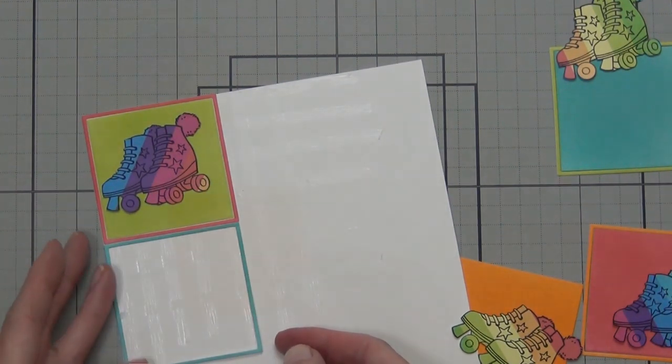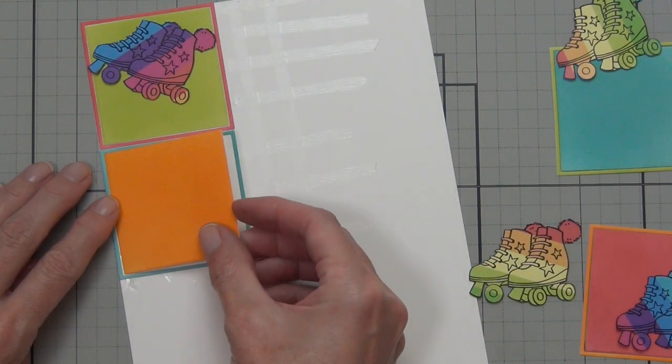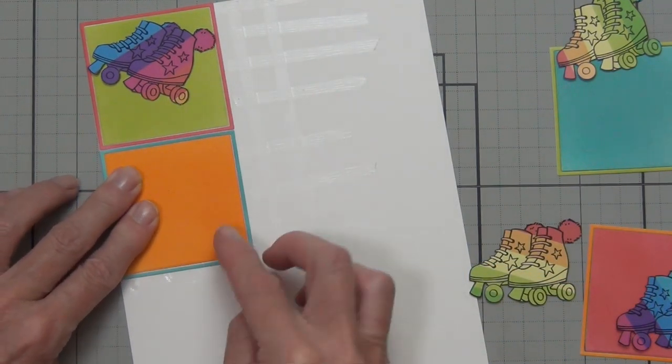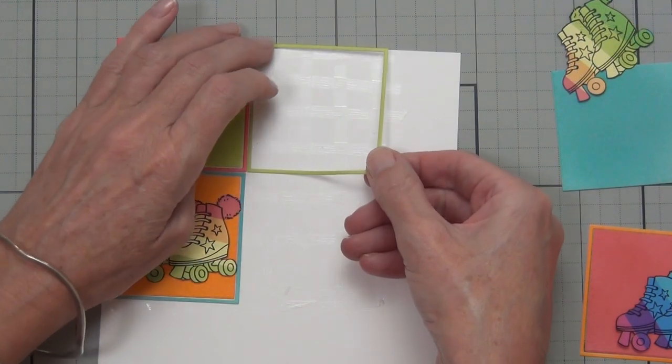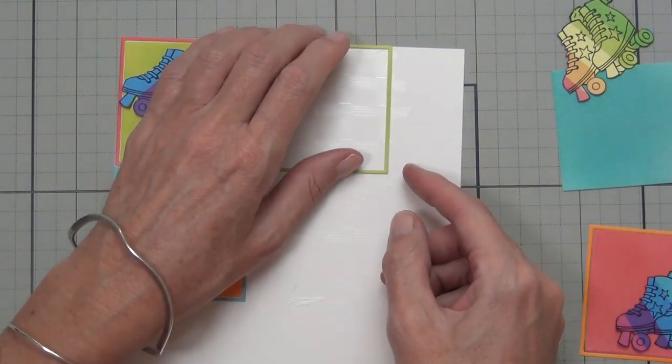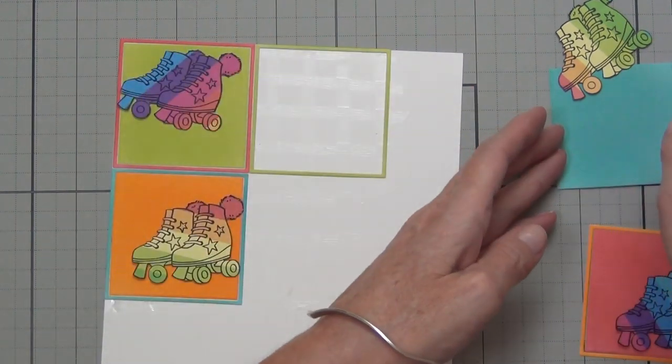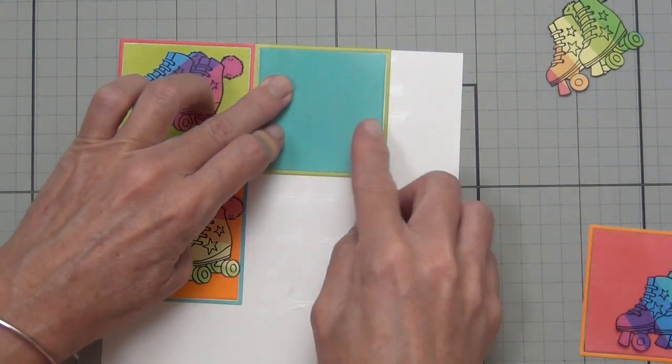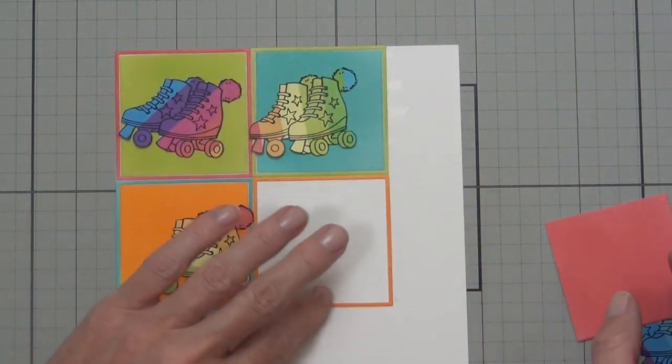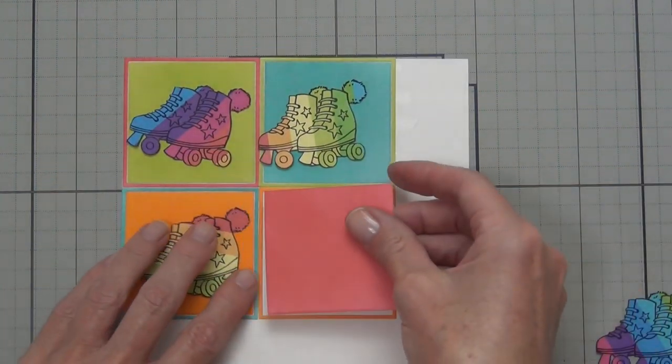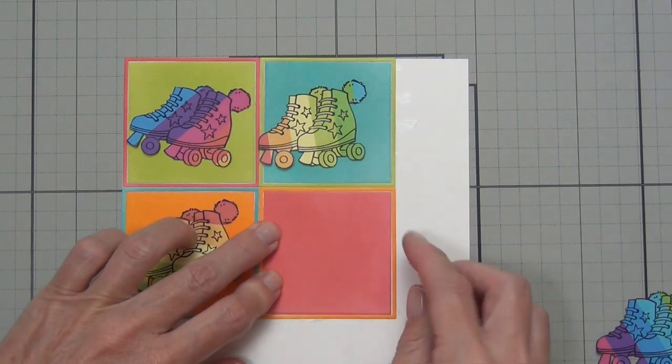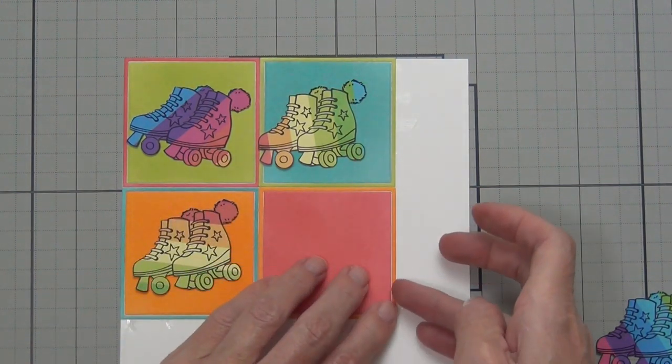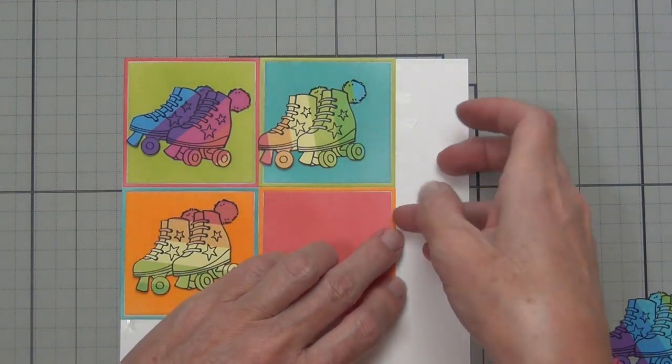I did think about doing a black border and that did look good as well, but in the end, after much debate, the white one won. It's going to be quite a big card—the finished size of the card base was actually five and a half inches squared. So it is a big card, but it will fit in a six-inch envelope.